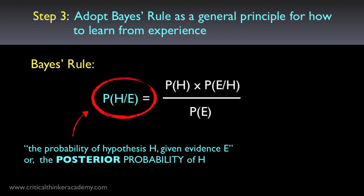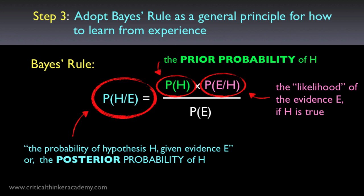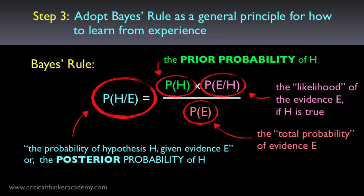On the subjectivist reading, P(H|E) is the degree of belief we should have in hypothesis H once we've learned about evidence E — this is called the posterior probability of the hypothesis. P(H) all by itself is called the prior probability: the degree of belief we had in H before learning about the new evidence E. In our example, this would be the probability that the patient has HIV before learning the results of the blood test. P(E|H) is called the likelihood of the evidence given the hypothesis — how likely it is that we would observe evidence E if hypothesis H were true. So in our example, this is the probability that someone will test positive for HIV given that they actually have the virus, which for a very reliable test might be around 95%. The term in the denominator is called the total probability of the evidence E, which will also depend on information about the false positive rate for the test.